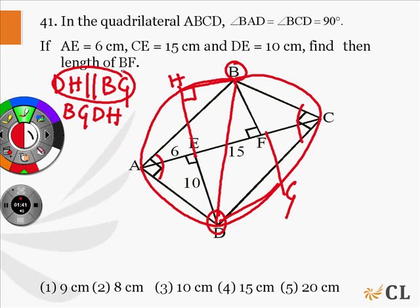Since AC is perpendicular to both DH and BG, EH will be equal to BF.